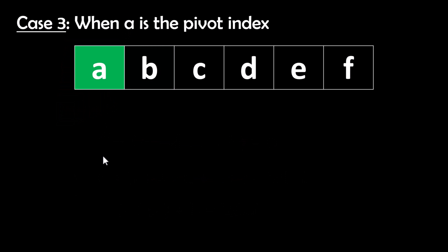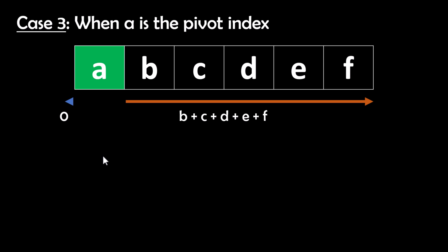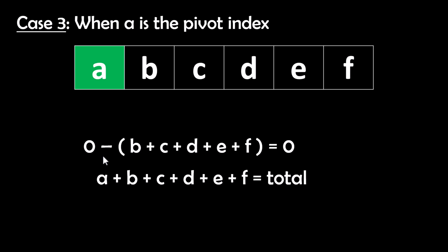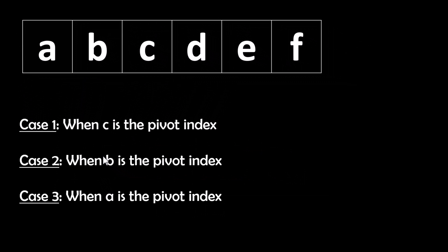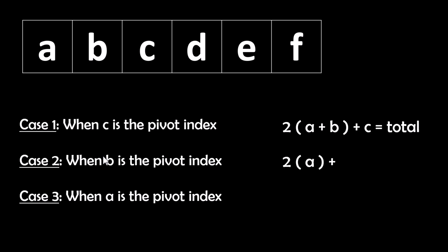In Case 3 where a is the pivot index, there are no values to the left so the left sum is zero. All the values to the right are b, c, d, e, f and both sides should be equal. We take the equation, add them up, and cancel out b plus c plus d plus e plus f. In this case a equals total — so in any array if the starting index value equals the total then that index is the pivot index. Summarizing all three cases: we get 2 times (a plus b) plus c equals total, 2 times a plus b equals total, and a equals total.